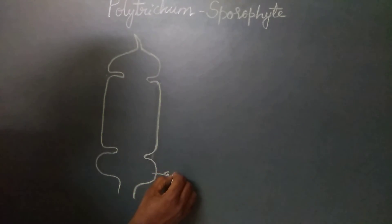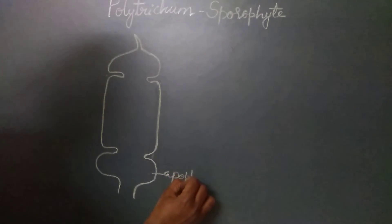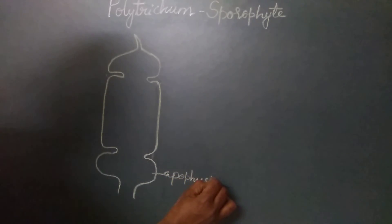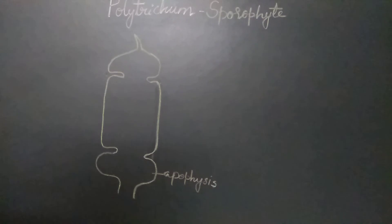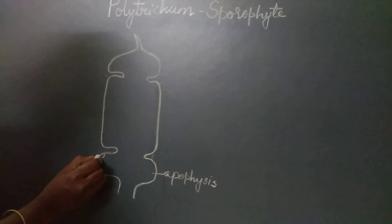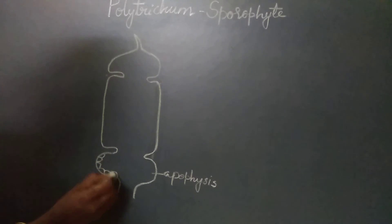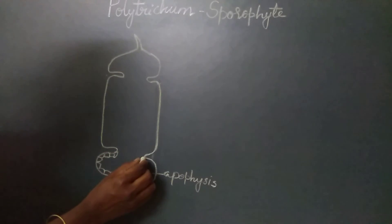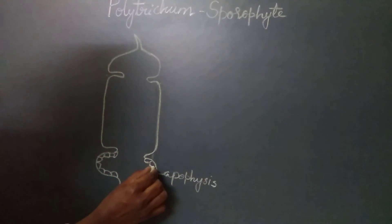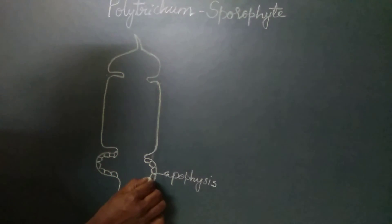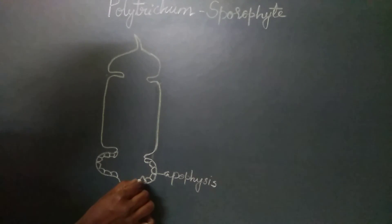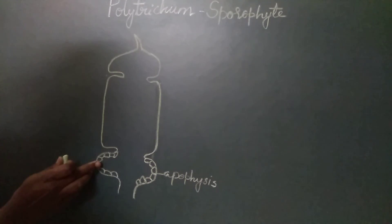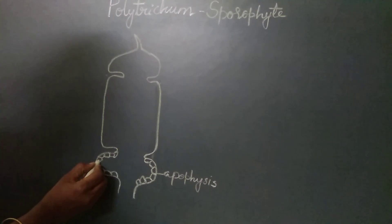The apophysis is made up of parenchymatous cells, but the outermost layer is the epidermis which has thick-walled cells. The epidermis of the apophysis is interrupted by stomata.